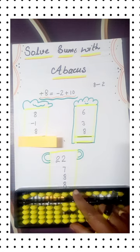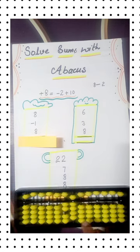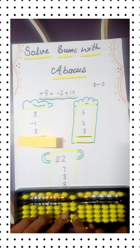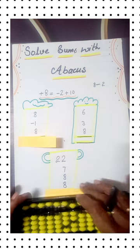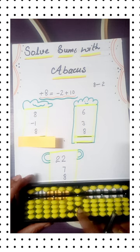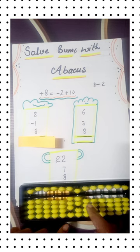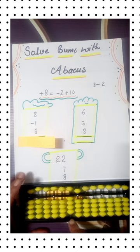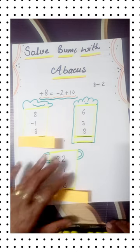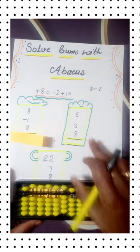Plus 7 plus 8 minus 2 plus 10. Again plus 8, we have only 2 on ones row, that's why we will apply the formula minus 2 plus 10. Read the answer: 45. Yes, correct answer.